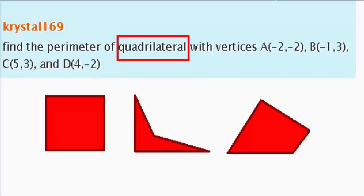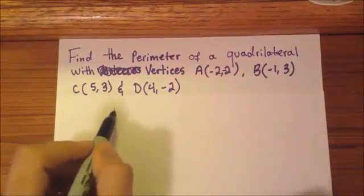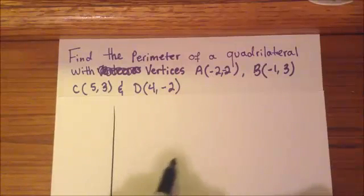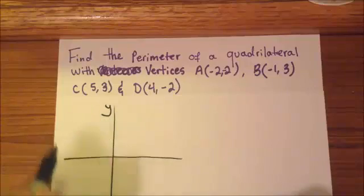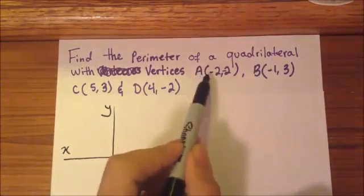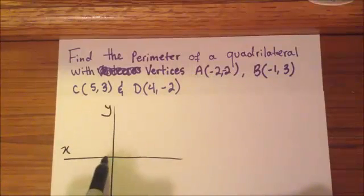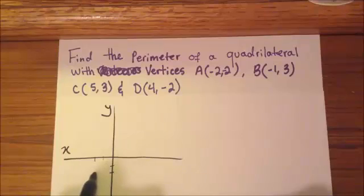In order for us to have a better understanding of this problem, I'm going to plot the points in the coordinate plane. This is going to be my y-axis and this is going to be my x-axis. My point A is sitting at negative 2, negative 2. That's my point A.